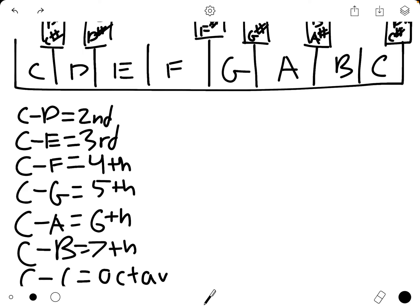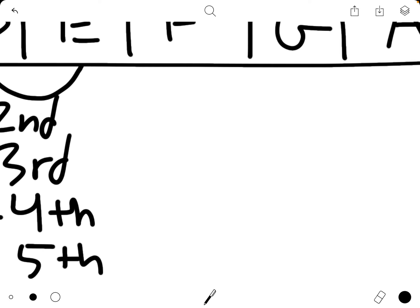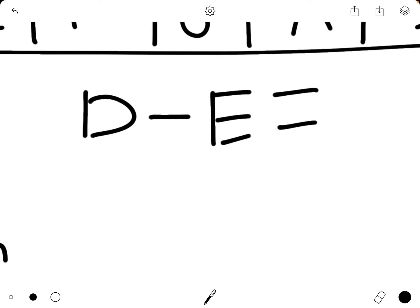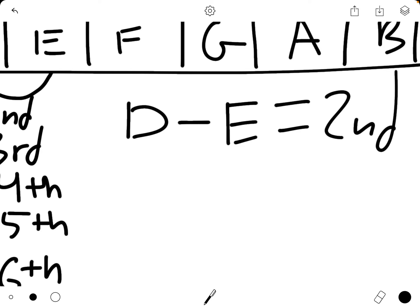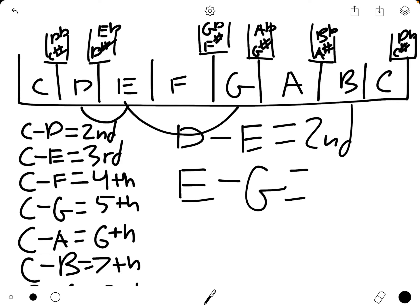So far, we've only done this in comparison to C's, but this is true no matter what's going on. So if we go from a D to an E, it is a second. Let's write down a couple of these. A D to E equals a second. An E to a G equals a third, because we have a letter in between.